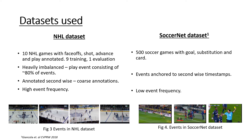The datasets are annotated second-wise, meaning the annotations are coarse. This is because hockey events are quite fast and happen in fractions of seconds, so we do not have the exact frames where the event is happening. Also, the events have quite a high frequency. On the other hand, the SoccerNet dataset consists of 500 soccer games with events goal, substitution, and card annotated. The events are anchored to second-wise timestamps, and this dataset has a low event frequency. Since the events are anchored to second-wise timestamps, we do not have any frame-level annotations. Hence these two datasets represent coarsely annotated datasets.